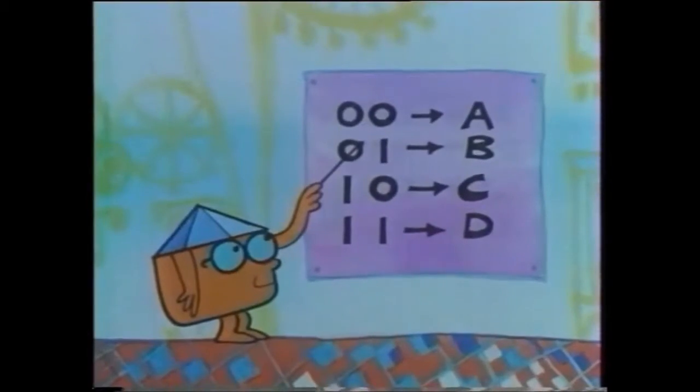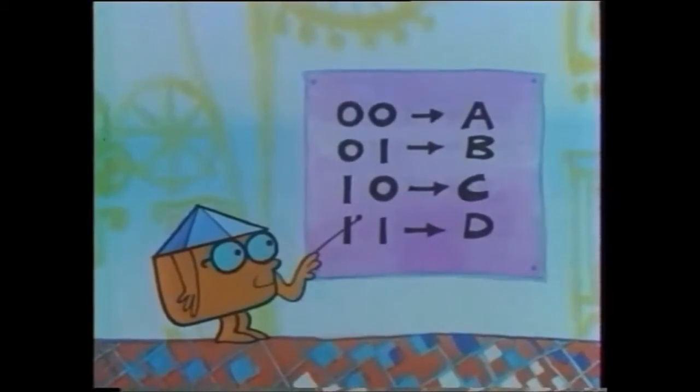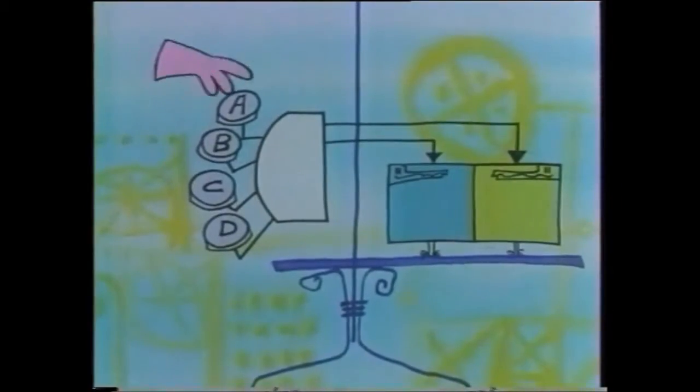So now let's say that zero zero corresponds to A, zero one to B, one zero to C, and one one to D. With a cleverly wired encoder, my two squirks can memorize the first four letters of the alphabet.